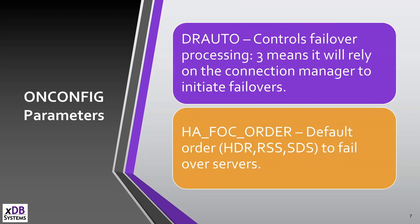The onConfig parameters we care about are DR_AUTO. If you haven't changed it and you're using HDR, this is how failovers are handled. If you set it to 3, it'll let Connection Manager be the arbiter on whether a failover is going to happen. The other parameter is HAFOC_ORDER — if you're doing a failover, what server is going to be secondary? Is it going to be your SDS server, your HDR server, or an RSS server? This only matters if you're doing automatic failover.